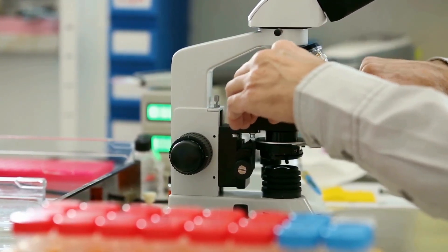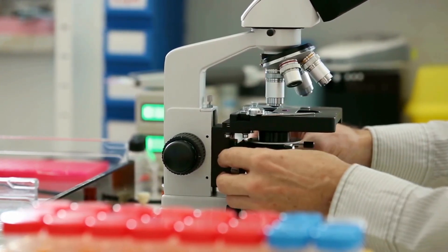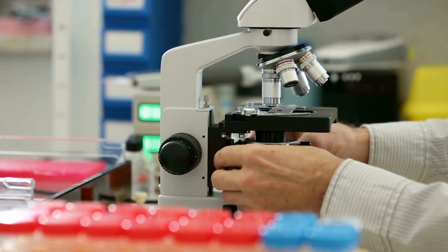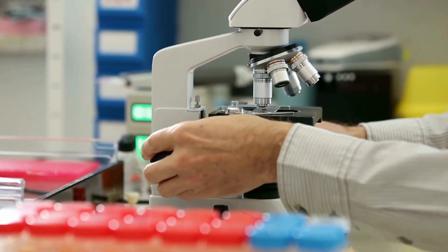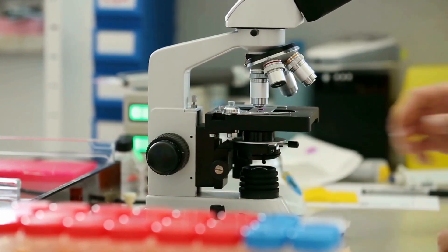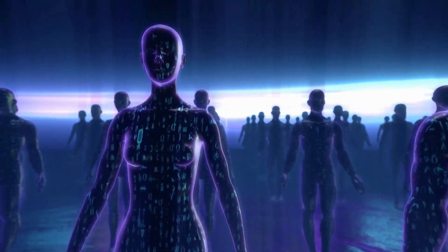The process of cloning involves taking a somatic cell from the donor and implanting it into an egg cell. The egg cell then develops into an embryo with identical genetic information as the donor.